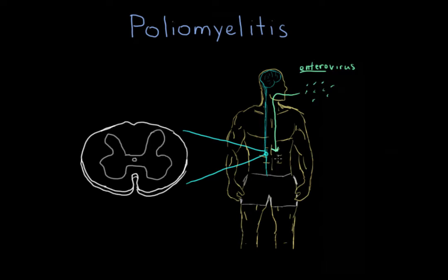Once it's in the intestines, it'll replicate. It'll duplicate itself until there's more and more virus in the body. This enterovirus, poliovirus, can actually replicate in the throat as well. So you see these two sites of replication.